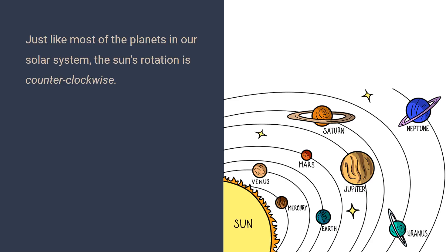Just like most of our planets in our solar system, the sun's rotation is counterclockwise. The earth rotates faster than the sun does. The sun's rotation is very complex.